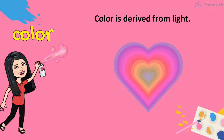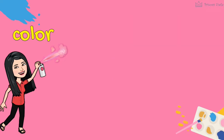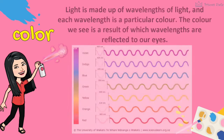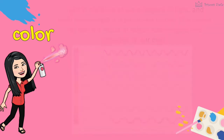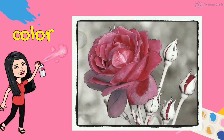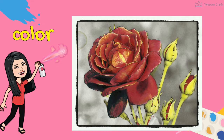Light is made up of wavelengths of light, and each wavelength is a particular color. The color we see is a result of which wavelengths are reflected back to our eyes. Color magically gives life to your artwork.